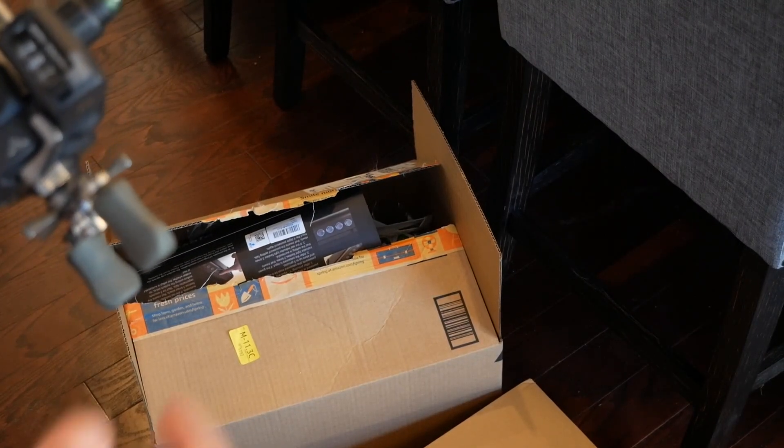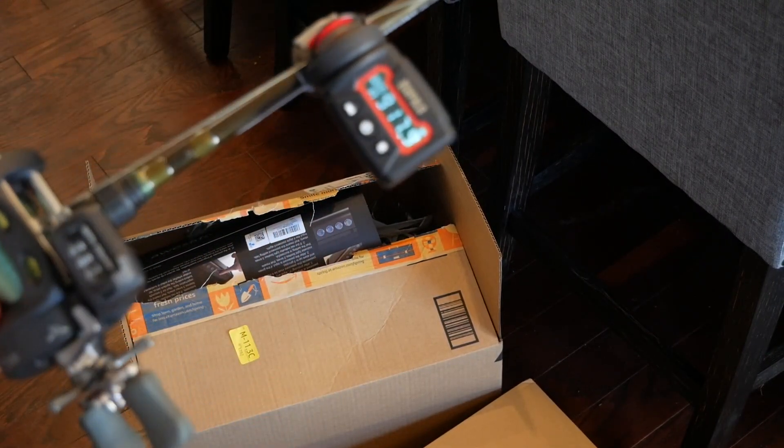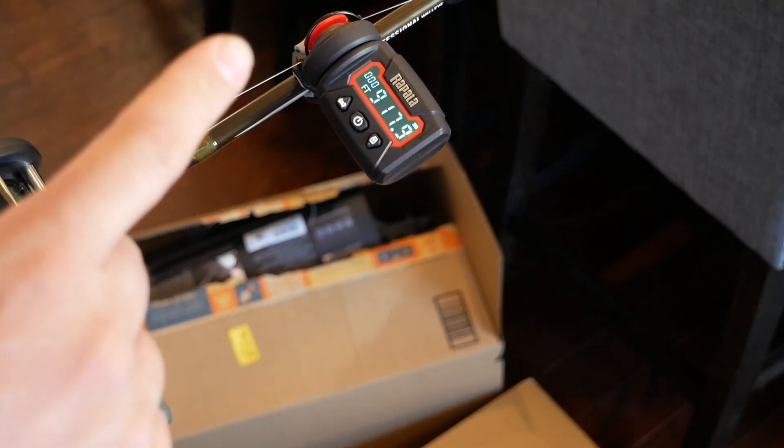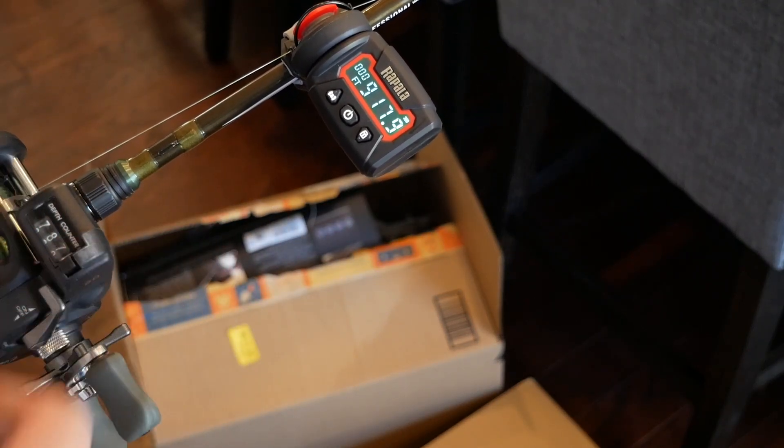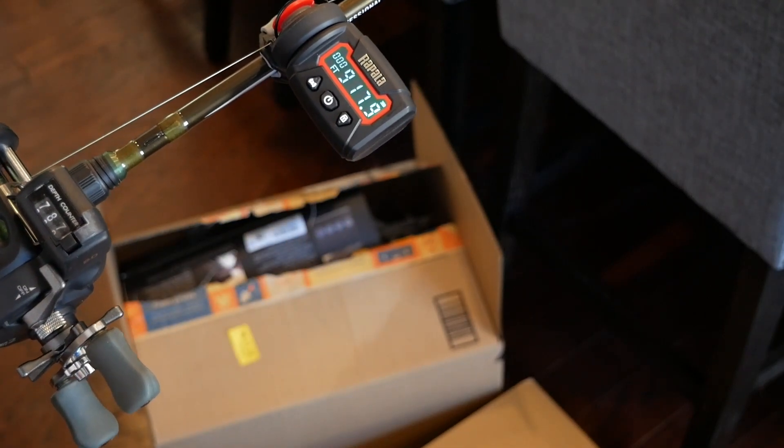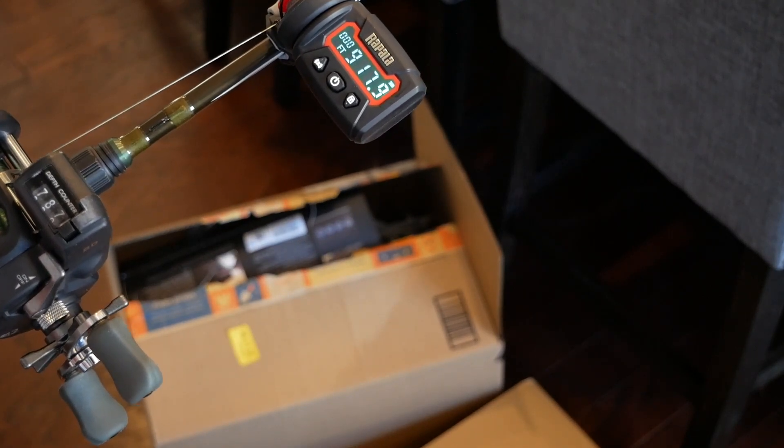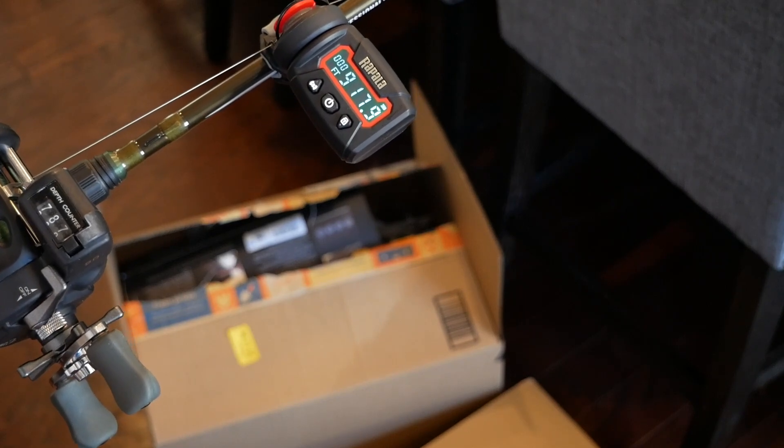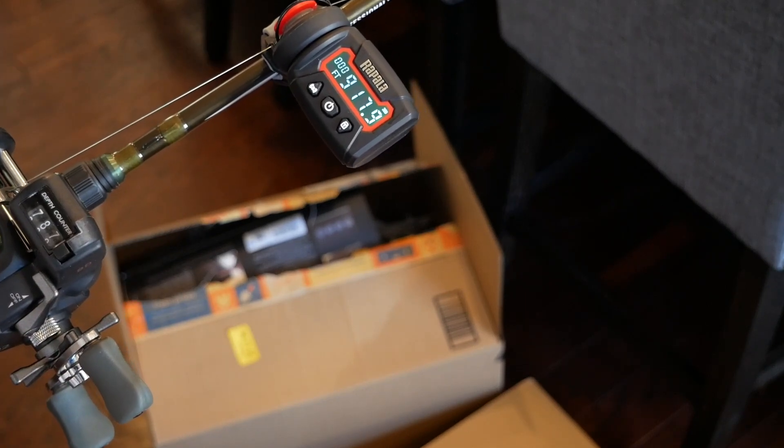So the last one was 925. This one 917. That's within about a six foot difference. So there's almost the exact same line on this one as there is on my other reel. And now I know that they're fairly close.